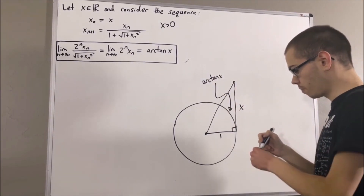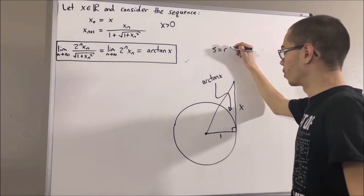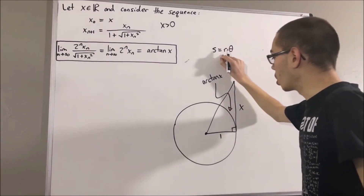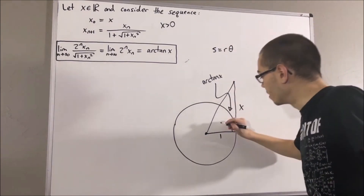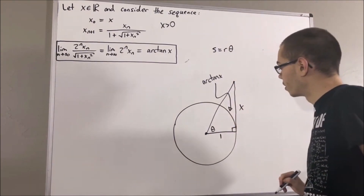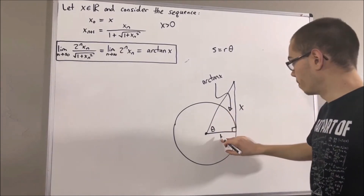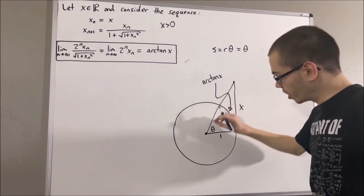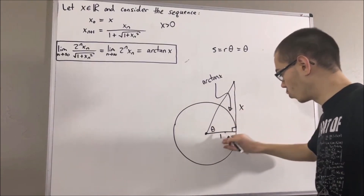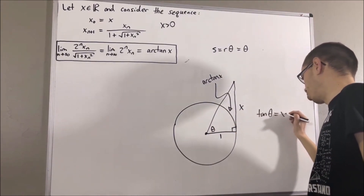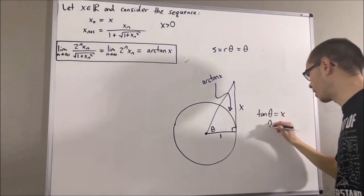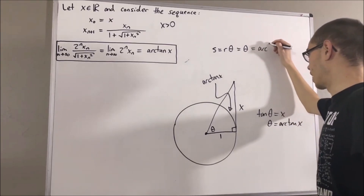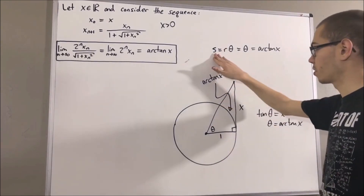Why is that the case? Because we have the following formula for arc length: s equals r theta, where s is the length of the arc, r is the radius of the circle, and theta is the measure of the central angle. The radius of the circle is just one, so r theta is equal to theta. From right triangle trigonometry, the tangent of theta equals x over 1, so tangent of theta equals x. Solving for theta, we get theta equals the arctangent of x. So the arc length is precisely arctangent of x.